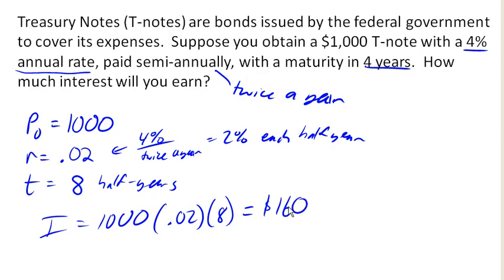Now in the case of simple interest, it turns out that it doesn't really matter how often we're paid, except for how often we're going to get a paycheck — otherwise it's not highly relevant. However, if we wanted to know how much interest we were going to earn each half year, we would need to figure out that 2% of $1,000 is $20. We'll earn $20 each half year in interest.